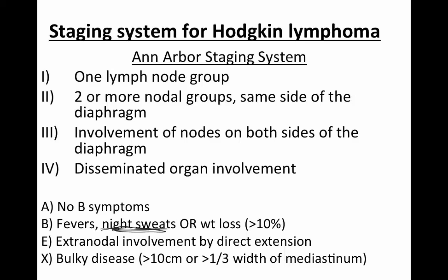Bulky disease is also important. If any lymph nodes are more than 10 centimeters, or occupy more than a third of the width of the mediastinum on a PA and lateral chest x-ray, that's given the subscript X, or bulky disease. This is important for prognosis, because patients with bulky disease generally require radiation in addition to chemotherapy.